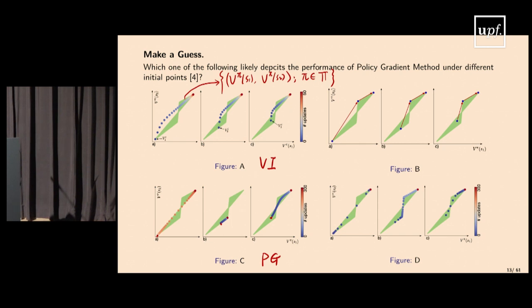Figure D is natural policy gradient — an improved version of policy gradient that converges much faster than standard policy gradient and is less sensitive to initial points. We'll dive into why you'd expect these behaviors.